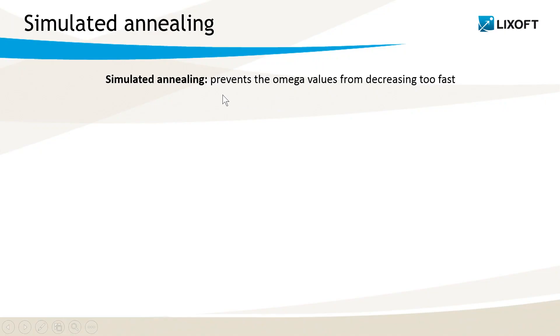As a brief reminder, the simulated annealing prevents the omega parameters and the error model parameters to decrease too fast. I would like to show you what happens for one compartment model with oral absorption and linear elimination parametrized with KA, V and K.